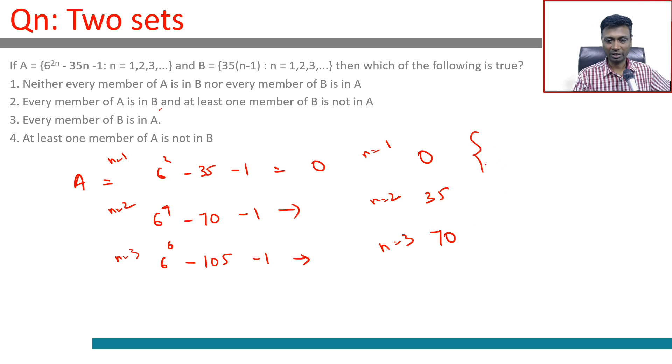B is more predictable. Every multiple of 35 from 0 onwards, every positive multiple is there in this set.